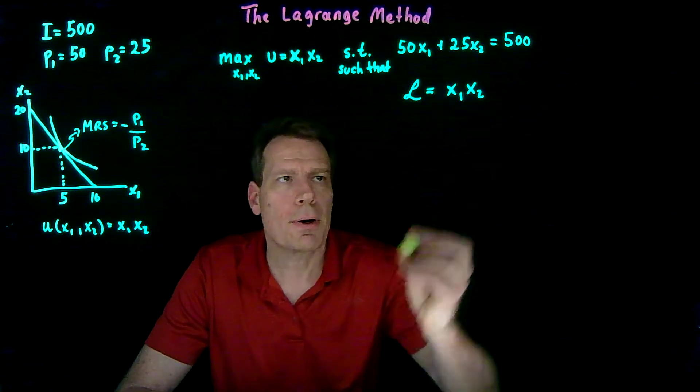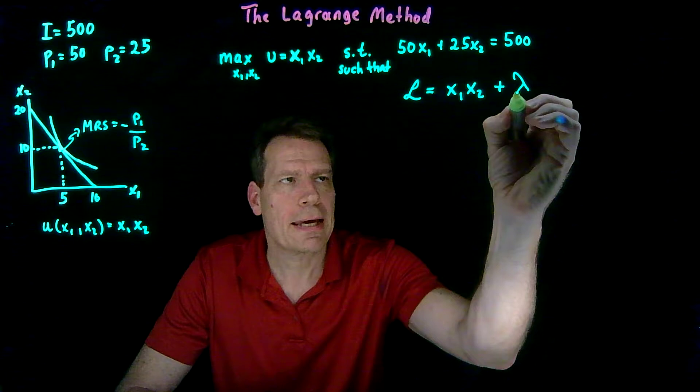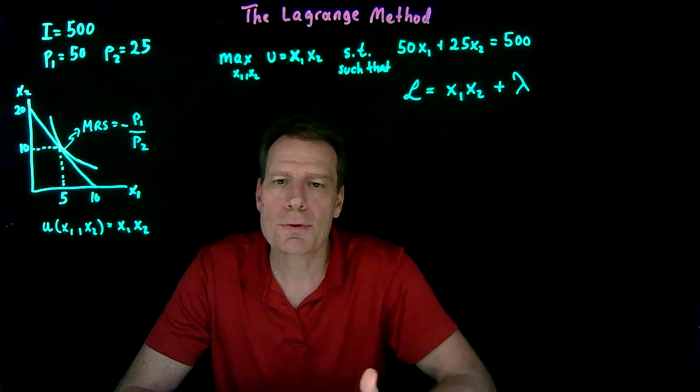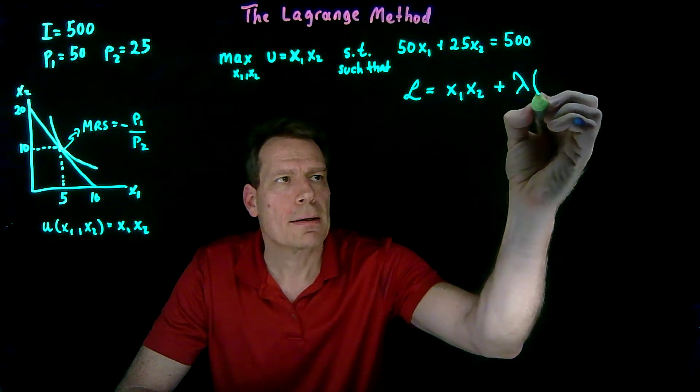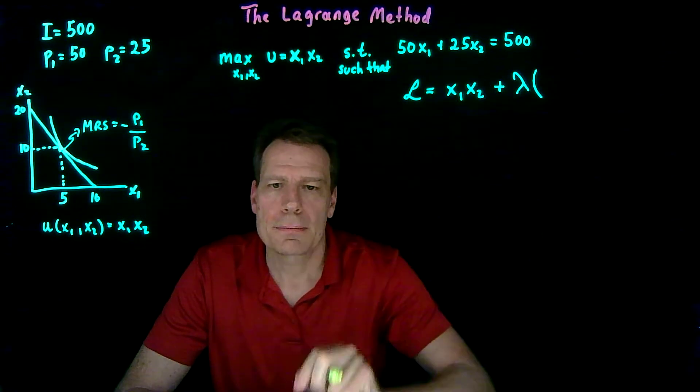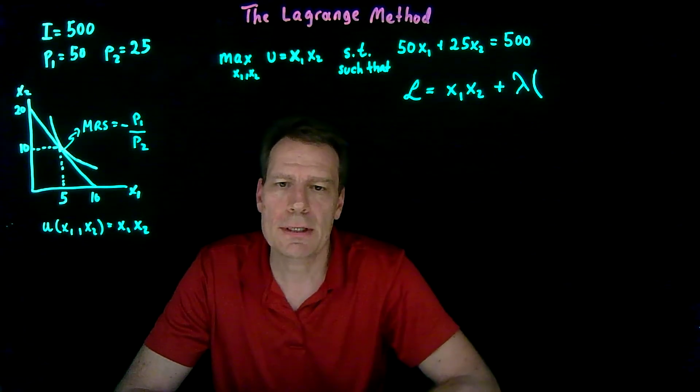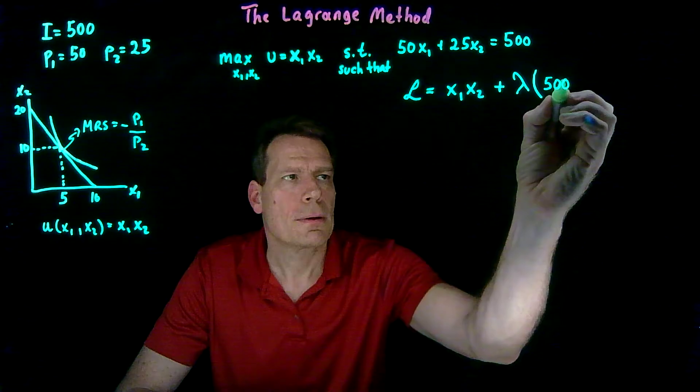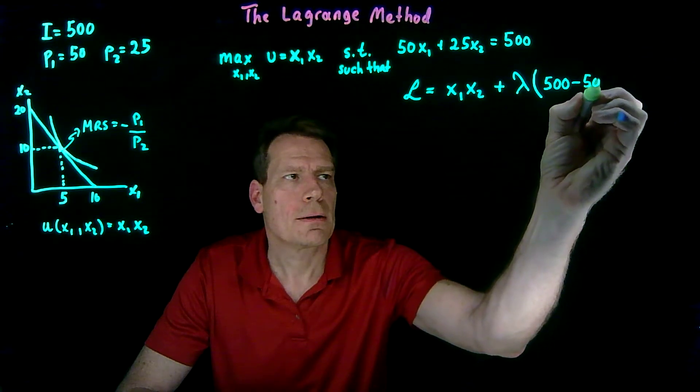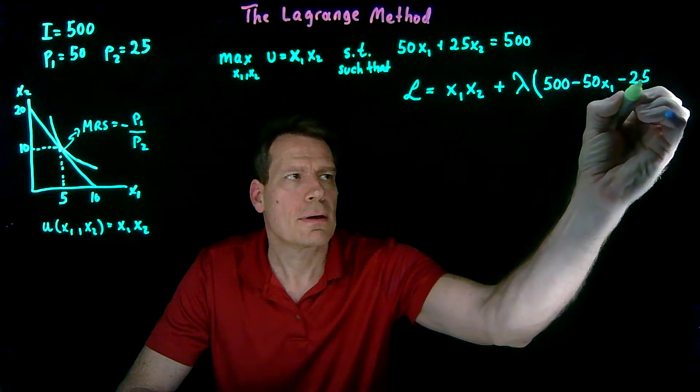The second part is preceded by a Greek letter lambda, which is called the Lagrange multiplier. And it's followed by the constraint. But the constraint with all the terms collected on one side of the equation. So 500 minus 50x1 minus 25x2.